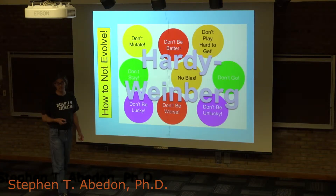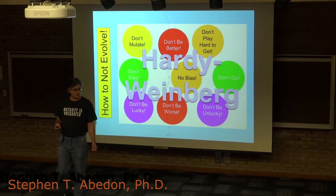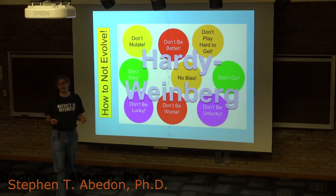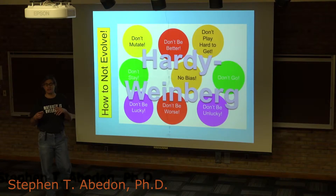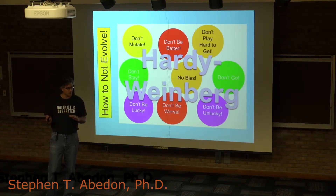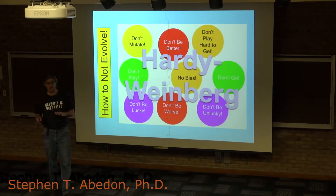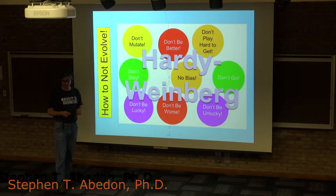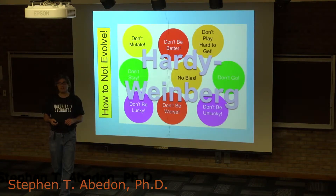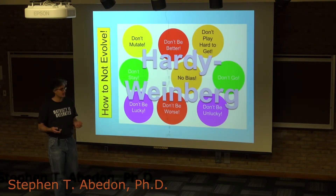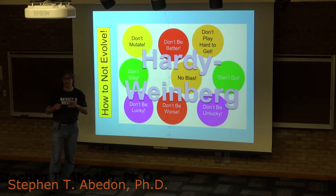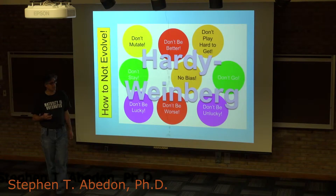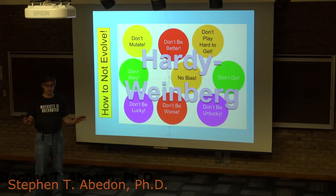Basically, it was just a simple mathematical formula that took a diploid population and followed it through time. It basically said that if you didn't have evolution, then you didn't have any changes in the frequencies of alleles. And also, if you had something called random mating, you would end up having the same frequency of genotypes persisting in the population for eternity, essentially.